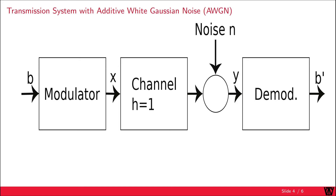Our modulator maps those bits to a complex symbol X. Then we send our signal over an error-free channel. At the receiver we receive the symbol Y, which includes the additive noise. Noise is caused, for example, by the receiver itself via thermal noise. It is very common to model the noise with a Gaussian distribution, so we call it an Additive White Gaussian Noise or AWGN channel.